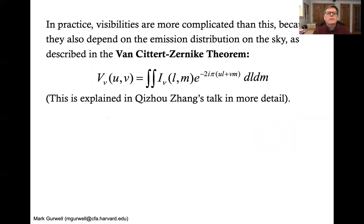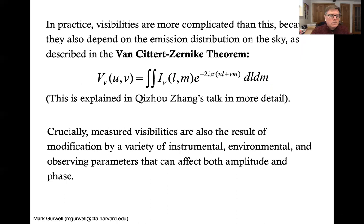So in practice, visibilities are much more complicated than this because it also depends upon the emission and distribution in the sky. This is described in the van Zernicke theorem, which basically relates the sky brightness distribution as a Fourier transform of the visibility data that an interferometer will see. You saw this in an earlier talk by Tiso Zeng.